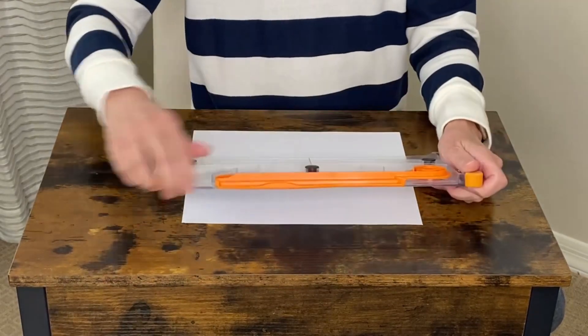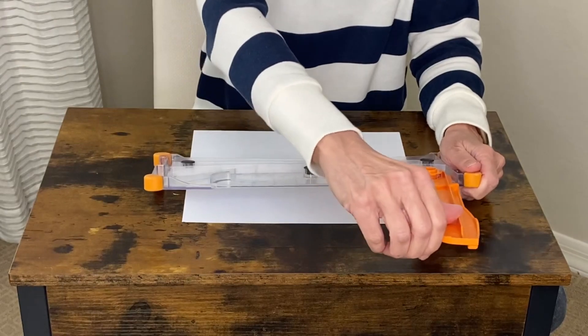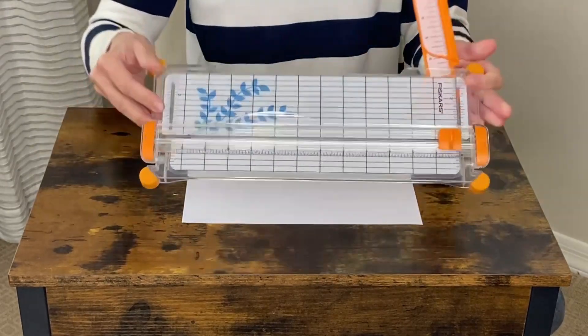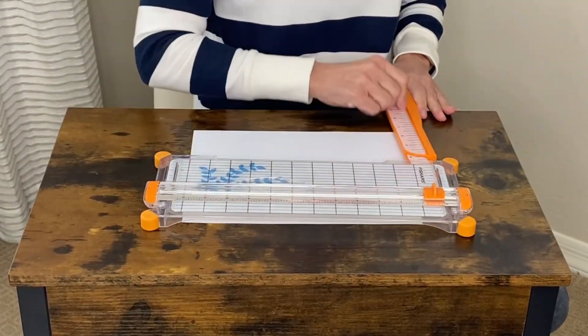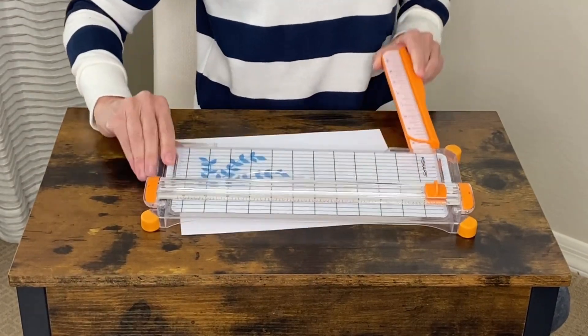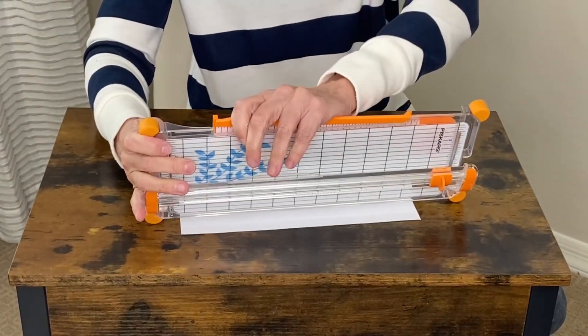On the back is a guide, and as you can see, it can open and close. When you turn it over, it helps to measure how long your paper is, and then it easily collapses back.